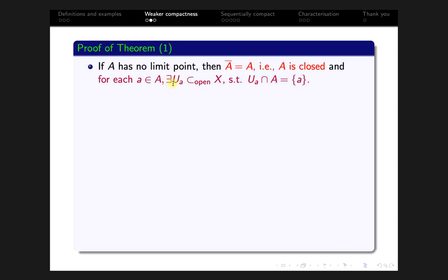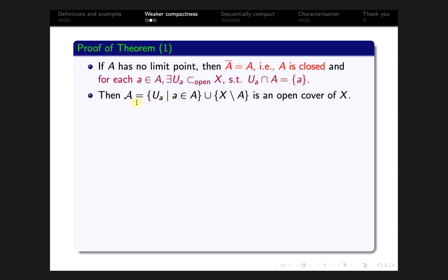Since A has no limit point, for every point a in A there exists an open set U_a in X such that U_a intersected with A equals the singleton set {a}.